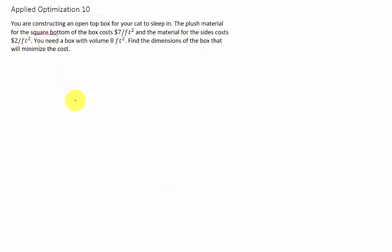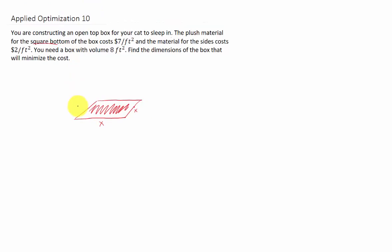The bottom of the box is square. We'll call this side X and that would make that side X as well. The plush material here is more expensive than the material for the sides. We can call the last dimension of our box Y. The volume of our box needs to be 8 cubic feet. So we can set up the formula that our volume, which is X times X times Y, or X²Y, needs to equal 8.